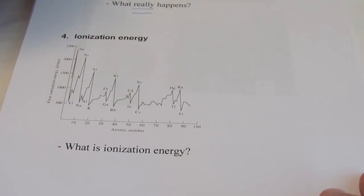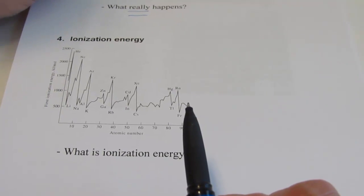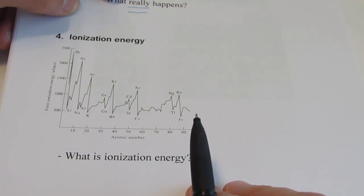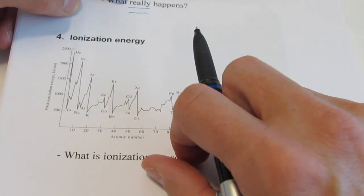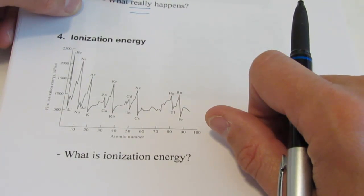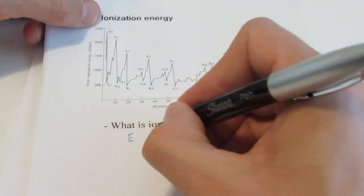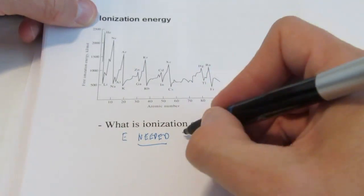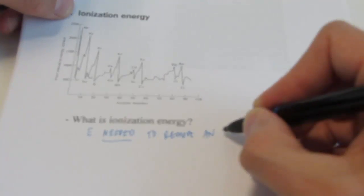A couple of other quick items I want to discuss with regards to periodic properties. The next is ionization energy. We've already talked about this a little bit — remember we talked about the alkali metals and did a demonstration when they react in water, and how it becomes easier to lose that outer electron as we go down the alkali metal family. Well, ionization energy is the energy needed — it's an endothermic process — to remove an electron from a neutral atom.